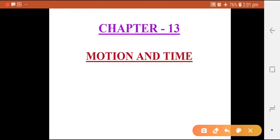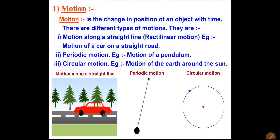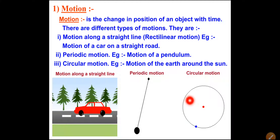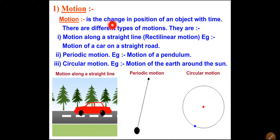Hello everyone, this is Chapter 13 - Motion and Time from Class 7th. Here we have to understand what is motion and time. If you see here, the car is moving continuously, the pendulum is also moving, and a blue dot is revolving around the red dot - an example of Earth revolving around the Sun. So, motion is the change in position of an object with time.